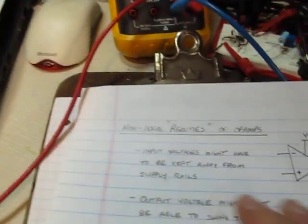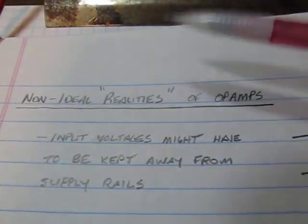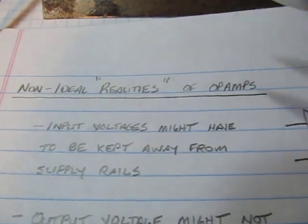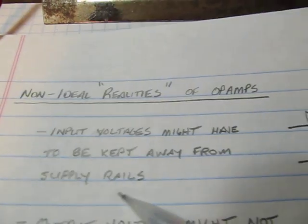Now there are some non-ideal realities of op-amps that you can think about when you start designing circuits. Some of the non-ideal realities are that the input voltages might have to be kept away from the supply rails.